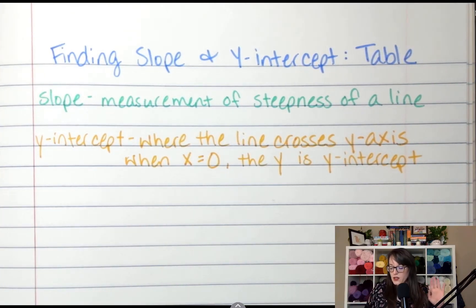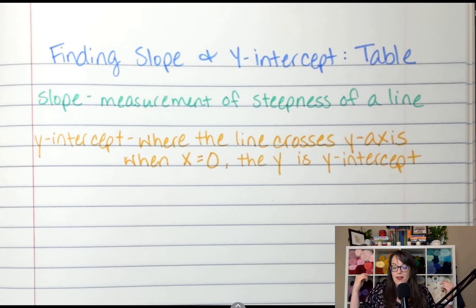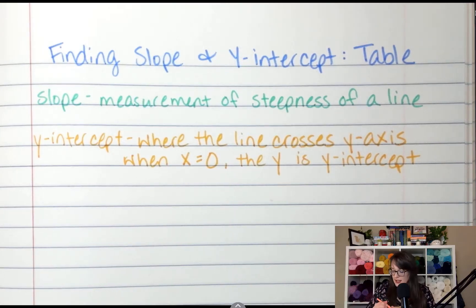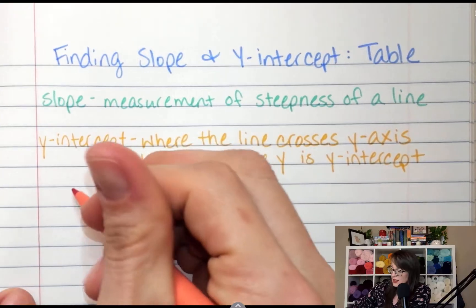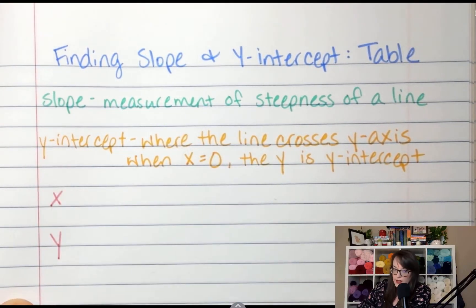This whole unit that we're moving into, we're going to be looking at straight lines that don't necessarily cross at (0, 0). If I looked at a table, x is always on top and y is always on bottom.